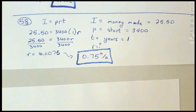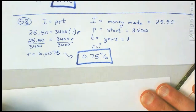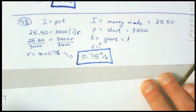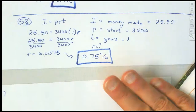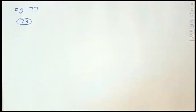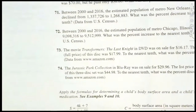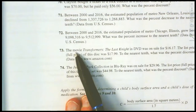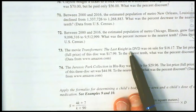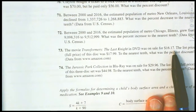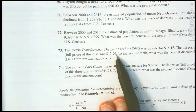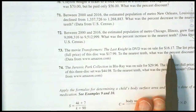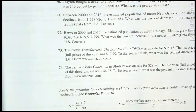Now we're going to look at question 73 on page 77 — a percentage problem. These don't really require a formula. It's more straightforward to read it, identify the pieces, and just calculate it out. The movie Transformers: The Last Knight on DVD was on sale for $16.17. The list price was $17.99. To the nearest tenth, what was the percentage discount?